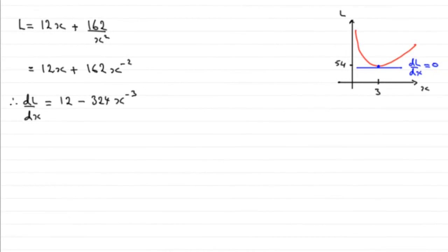Now in this last part we've got to justify by further differentiation that the value of L that we've got is a minimum. The value of L that we got in the last part was 54, and I showed you a sketch of the graph, but remember we've got to assume that we haven't got the sketch in front of us.